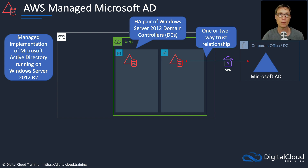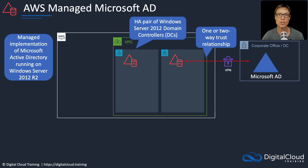A trust relationship is a concept associated with Microsoft Active Directory. It basically means that there's a trust between these two directories so that users in one directory are able to authenticate and get authorized to access resources in another Active Directory. A two-way trust relationship means that trust goes in both directions, so identities in either directory service are able to authenticate and get authorized to resources in the other Active Directory.